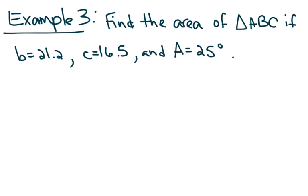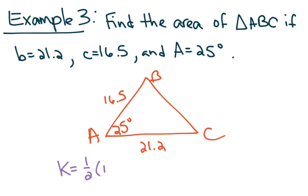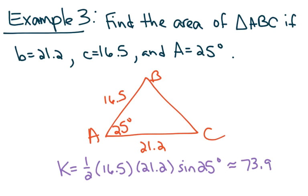If you have side-angle-side, you can find the area of the triangle. In example 3, find the area of triangle ABC if side B is 21.2, side C is 16.5, and angle A is 25 degrees. Drawing general triangle ABC: angle A is between sides B and C, which are the two sides given — that's side-angle-side. The area is one half times 21.2 times 16.5 times the sine of 25 degrees. Entering that in the calculator gives 73.9 square units.